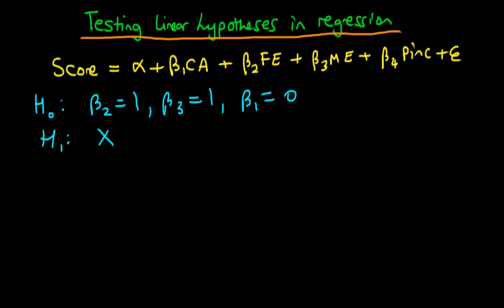So how do we go about this? Well just the same as we did before we just substitute each of these individual restrictions into the above model. Then what we get is score equals alpha plus, well beta 1 disappears because it's 0, then we have father's education, then mother's education because both coefficients on these variables are being constrained to equal 1, and then finally beta 4 times parental income plus epsilon.